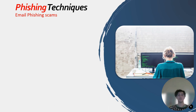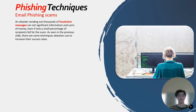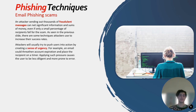Hello, my name is Michael, and I will be talking about phishing techniques and email phishing scams. An attacker sending out thousands of fraudulent messages can net significant information and sums of money, even if only a small percentage of recipients fell for the scam. Attackers will usually try to push users into action by creating a sense of urgency. For example, an email could threaten account expiration and place the recipient on a timer, causing the user to be less diligent and more prone to error.